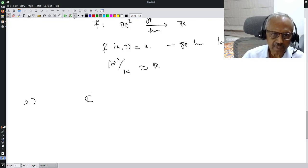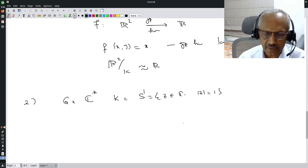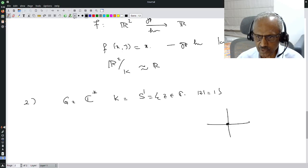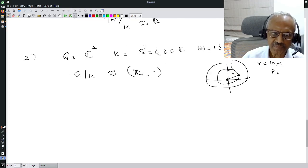Let us look at a second example. Let us look at G equal to C*, K equal to the circle group, set of all z in C so that mod z equal to 1. We already saw the cosets. The cosets are circles centered at 0. Each circle, the center is fixed, it only depends on R, R is in (0, infinity), which is positive reals. So I expect G mod K should be isomorphic to R⁺, positive reals under multiplication.